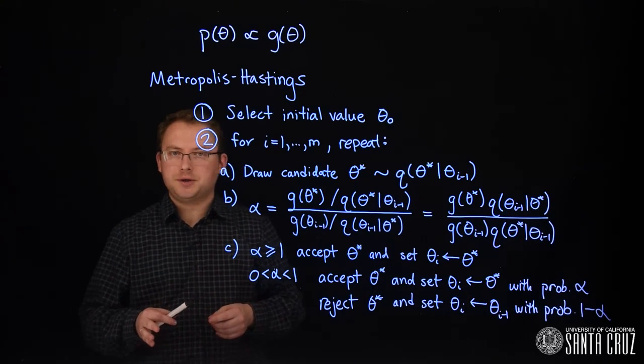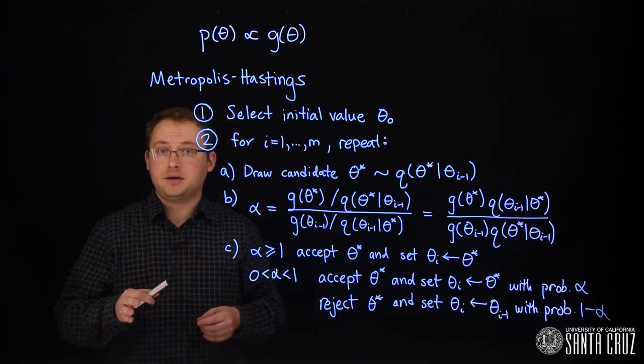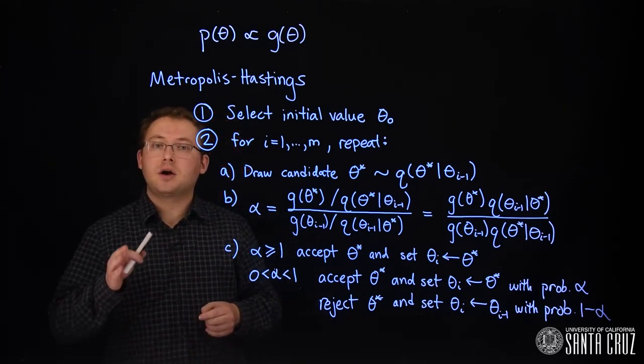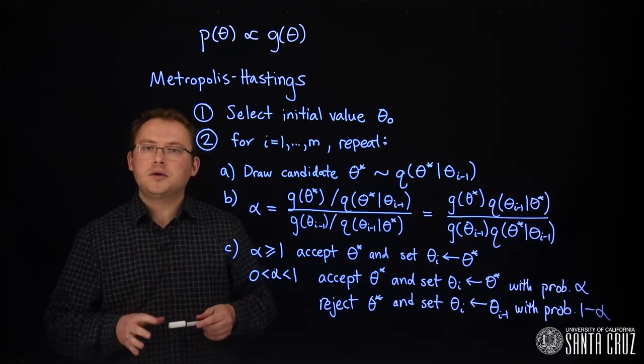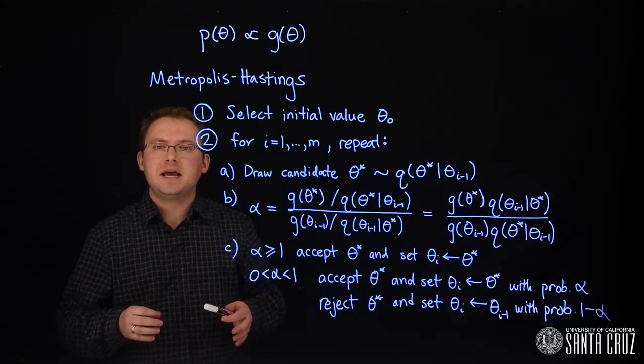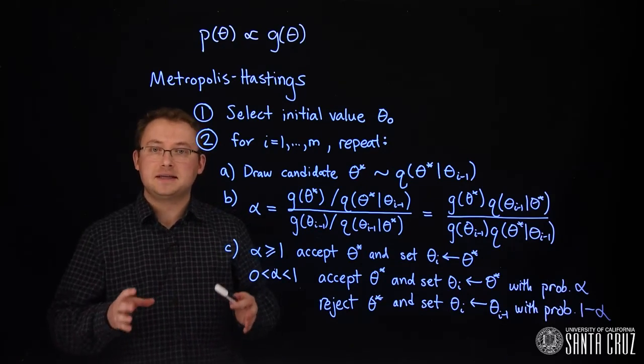Another popular option, one that does depend on the previous iteration, is called random walk Metropolis-Hastings. Here, the proposal distribution is centered on the previous iteration.